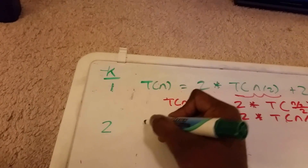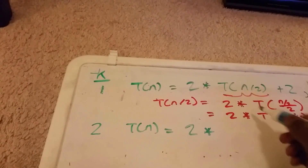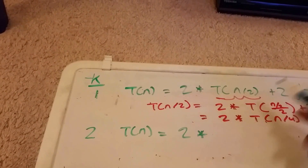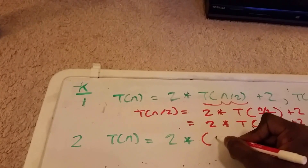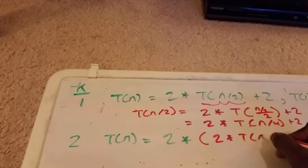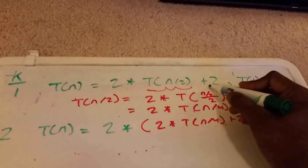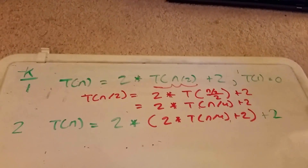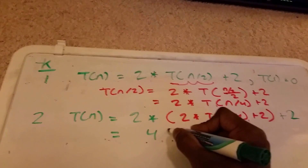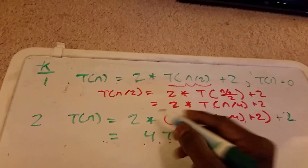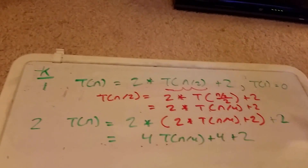Now we can rewrite the equation. We're substituting this in, so we get 2 times T(N/4) plus 2, and then we add our 2 here, plus 2. Rewriting this: 2 times 2 is 4, and 2 times 2 here is 4, then plus 2.